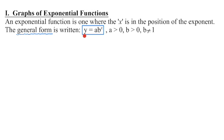If you take a look at the general form of an exponential function, we have a variable in the place of the exponent. a will be greater than zero, and b must be greater than zero — neither of those variables can equal zero. If I put a zero in for a, the whole thing is gone. If I put a zero in for b, the whole thing is gone. We also won't have a negative a value and cannot have a negative b value.